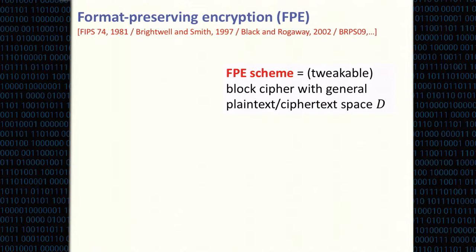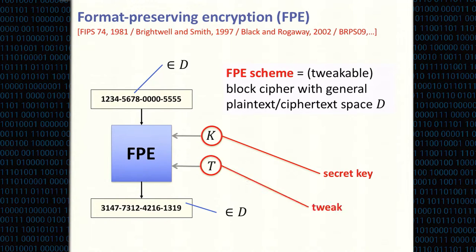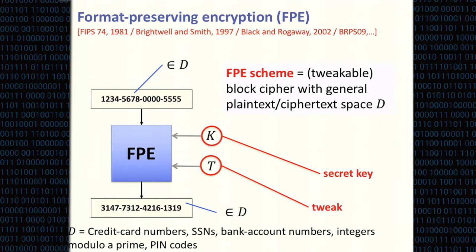A more flexible primitive is format preserving encryption. Roughly, an FPE scheme can be thought of as a block cipher where plaintext and ciphertext belong to a general domain D. For example, an FPE scheme might encrypt plaintext consisting of valid credit card numbers, and the resulting ciphertext are again valid credit card numbers, using a secret key and additionally a tweak. Other examples include social security numbers, pin codes, bank account numbers, or integers modulo a prime.